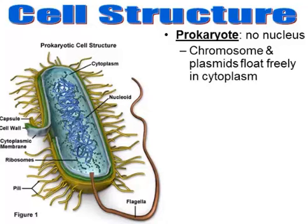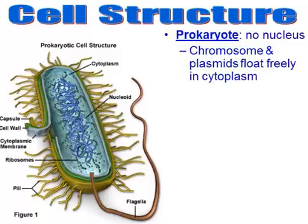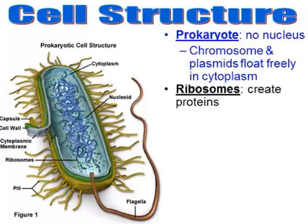Besides their normal chromosomes, bacteria often also have little circular structures of DNA called plasmids. You'll see more about plasmids in a little bit.